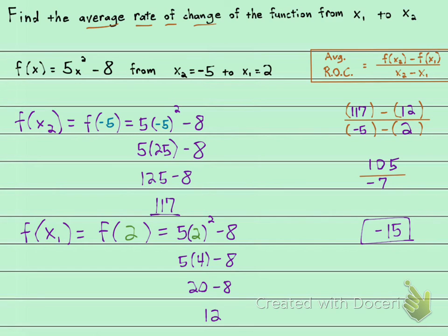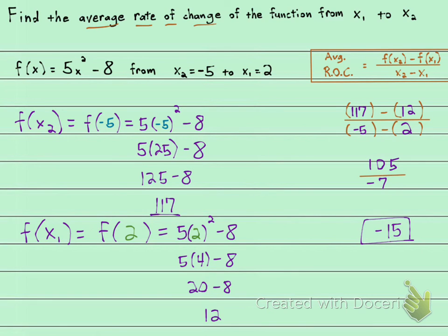And that would be a serious down slope — something steeper than that. But this is it: the average rate of change between those two points is negative 15.